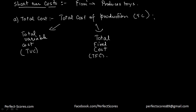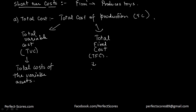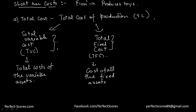Now, what is the total variable cost? It's actually the total cost of the variable assets. And if I talk about the fixed cost, that is the cost of all the fixed assets. Fixed costs are something which do not change in the short run. The variable cost keeps on changing — for example, purchasing raw material is a variable cost because raw material is a variable factor that I can change in the short run.